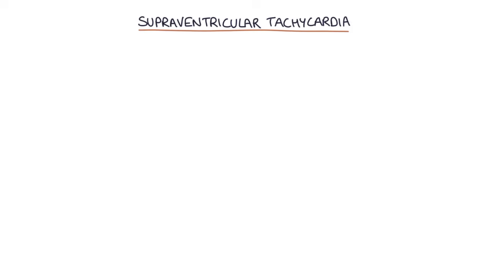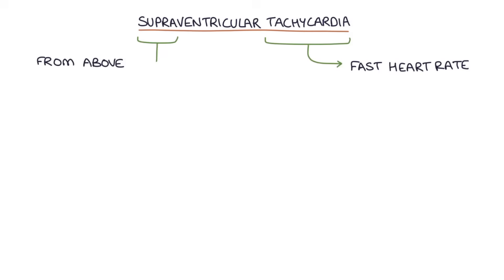Supraventricular tachycardia refers to a fast heart rate, which is called tachycardia, that's caused by abnormal electrical signals that come from above — which is what 'supra' refers to — the ventricles, meaning it essentially comes from the atria.